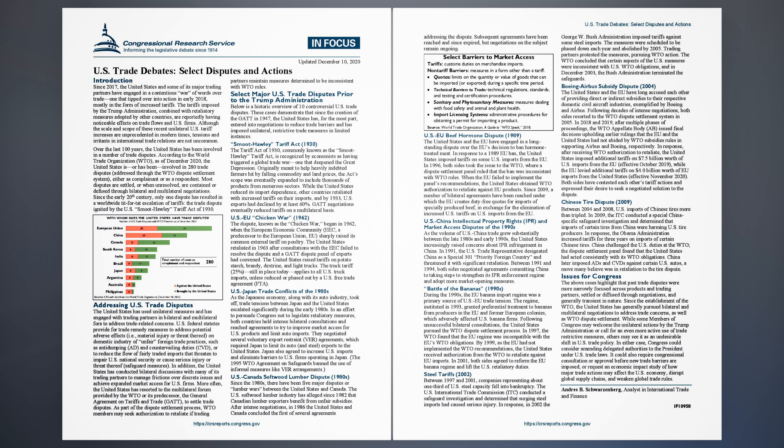Boeing-Airbus Subsidy Dispute, 2004: The United States and the EU have long accused each other of providing direct or indirect subsidies to their respective domestic civil aircraft industries, exemplified by Boeing and Airbus. Following decades of intense negotiations, both sides resorted to the WTO dispute settlement system in 2005. In 2018 and 2019, after multiple phases of proceedings, the WTO Appellate Body issued final decisions upholding earlier rulings that the EU and the United States had not abided by WTO subsidies rules in supporting Airbus and Boeing, respectively. After receiving WTO authorization to retaliate, the United States imposed additional tariffs on $7.5 billion worth of U.S. imports from the EU, effective October 2019, while the EU levied additional tariffs on $4 billion worth of EU imports from the United States, effective November 2020. Both sides have contested each other's tariff actions and expressed their desire to seek a negotiated solution to the dispute.